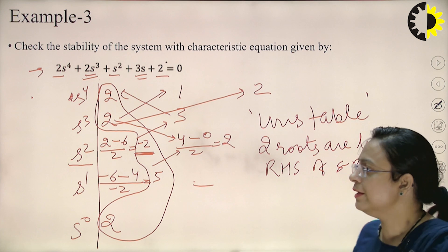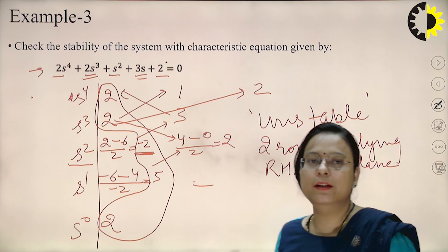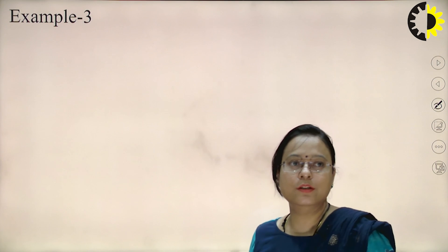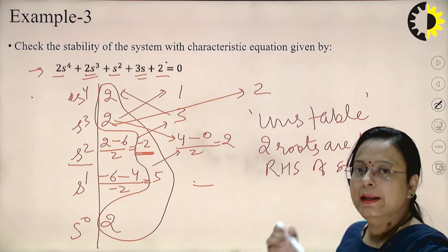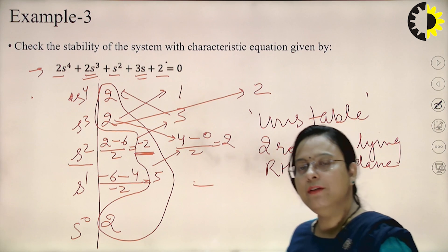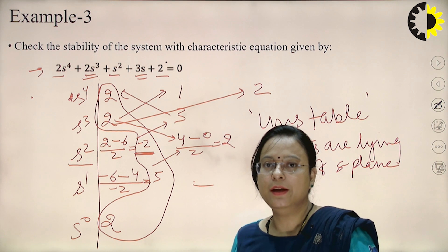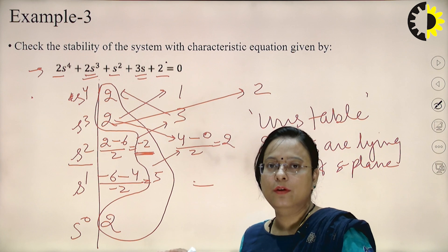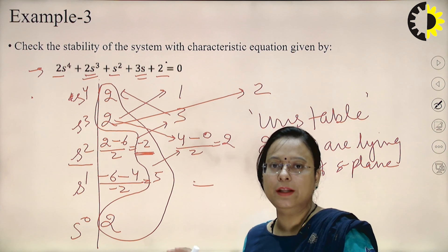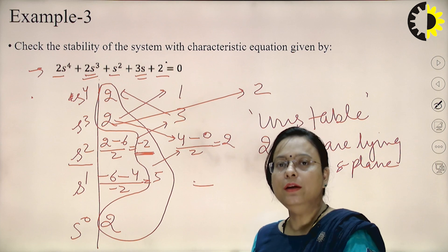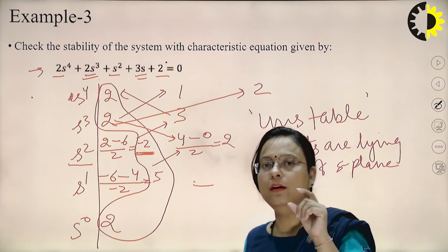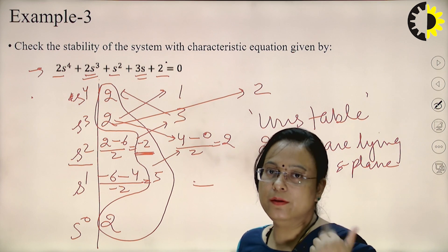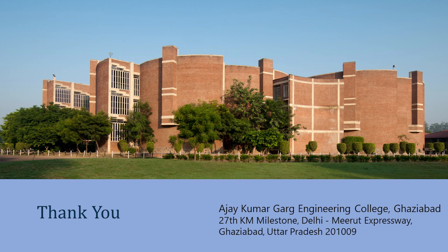So out of 4 total roots, 2 are lying in the right-hand side and 2 are lying in the left-hand side of the S-plane, confirming the system is unstable. That is it for today's lecture. In the next lecture I will discuss the two special cases: one where a row contains a zero element, and one where a single element of a row is zero. Thank you.